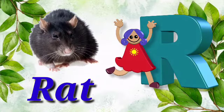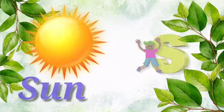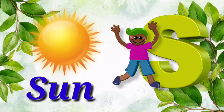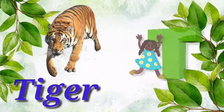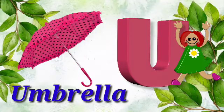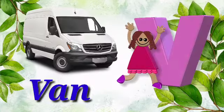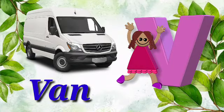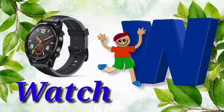R for Rat, S for Sun, T for Tiger, U for Umbrella, V for Van, W for Watch.